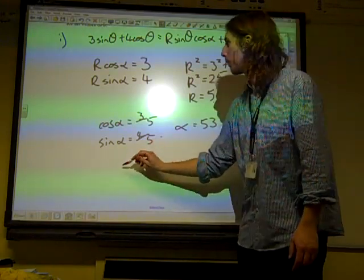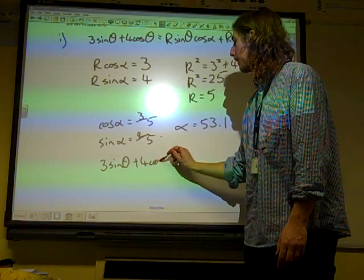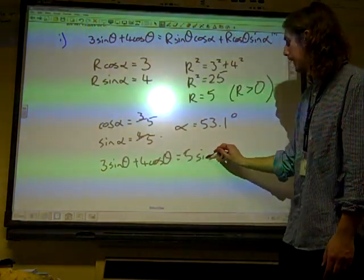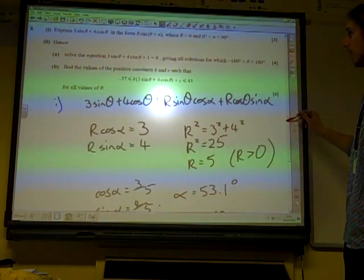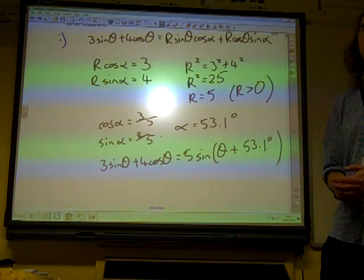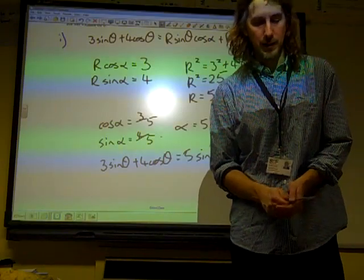So we've got 3 sine theta plus 4 cos theta is 5 sine theta plus 53.1. There we go. And that was quite... you should be getting three marks for that.